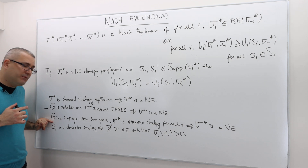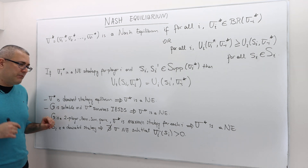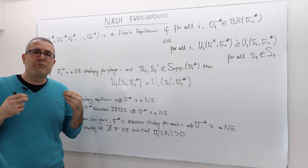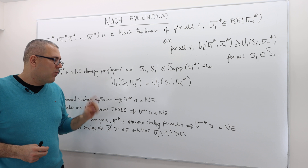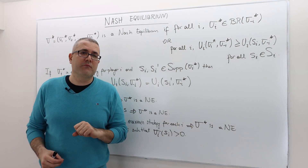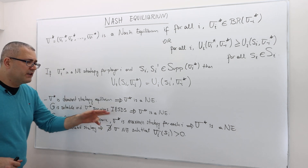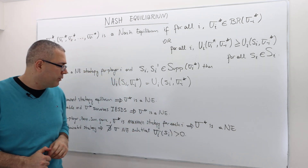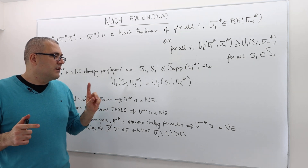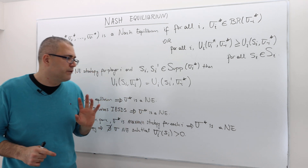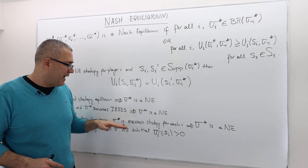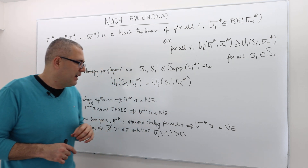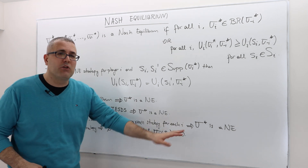Third remark: suppose game G is a two-player zero-sum game and sigma star is the maxmin strategy for each player. Then sigma star is also a Nash equilibrium. Interestingly, the converse of this statement is also true for two-person zero-sum games: if sigma star is a Nash equilibrium, there exists a payoff-equivalent version of another Nash equilibrium where each player is playing maxmin strategies. So for zero-sum games the arrow goes both ways, though the details are slightly different.